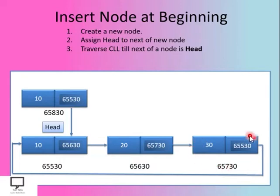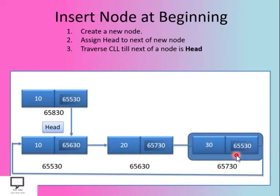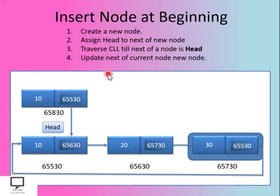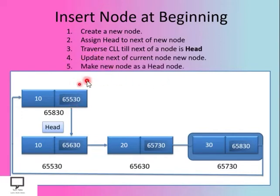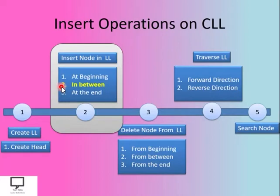Then we traverse the circular linked list until the next field of the last node equals head — meaning we traverse until the last node. We do this because the circular linked list currently holds the address of the previous head. Since the new node will become the new head, we update the next field of the last node to the address of the new node, forming a circular link. The last step is to make the new node the head node.